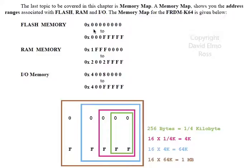We're going to find flash memory goes from this address to this address, RAM memory goes from here to here, and I/O memory goes from here to here.